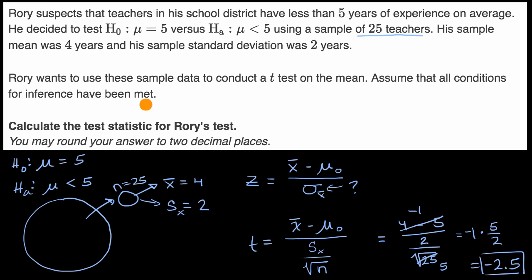And then what Rory would do is look this t value up on a t-table and say, if you look at a distribution of a t-statistic, we are negative 2.5 below the mean. So what he would want to do is figure out this area here, because this would be the probability of being that far below the mean, or even further below the mean. And so that would give us our p-value. And then if that p-value is below some preset significance level that Rory should have set, maybe 5% or 1%, then he'll reject the null hypothesis, which would suggest his suspicion that the true mean of years of experience for the teachers in this district is less than five.